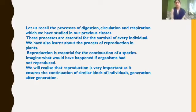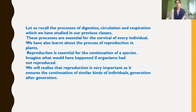Let's recall — there are different types of life processes. If I ask you to name some life processes, you can name digestion, respiration, circulation, excretion, and so on. These processes are essential for the survival of individuals. We have also learnt about the process of reproduction in plants. Reproduction is also essential for the continuation of species. Imagine what would happen if organisms had not reproduced. Reproduction ensures the continuation of similar kinds of individuals generation after generation.